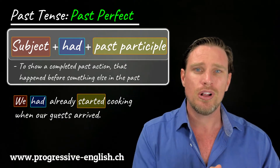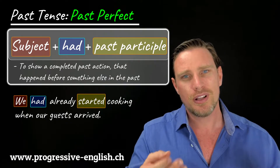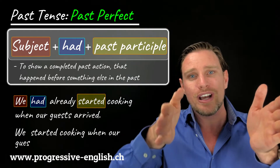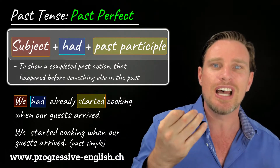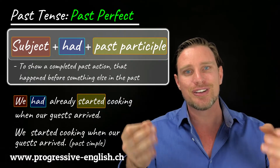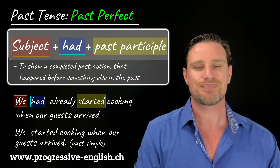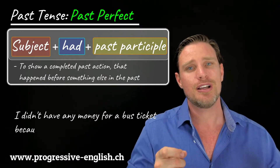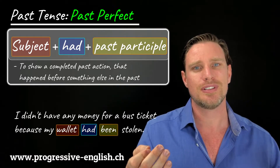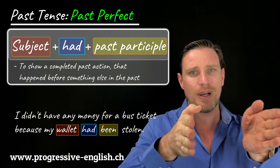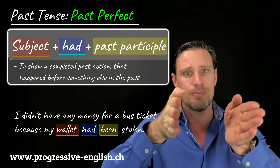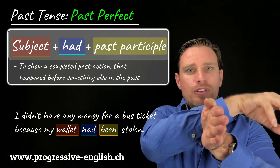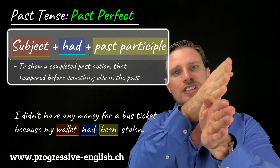If we had used past simple, the meaning would be completely different. The same sentence in the past simple would be: We started cooking when our guests arrived — meaning we started cooking when or after our guests arrived. So it has the opposite meaning. One more example: I didn't have any money for a bus ticket because my wallet had been stolen. My wallet being stolen is the earlier completed past event — it happened before I had no money for the ticket.